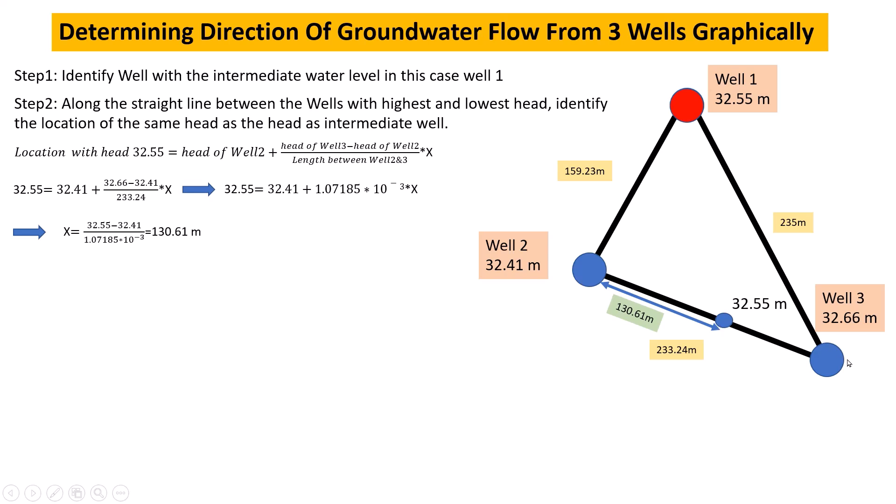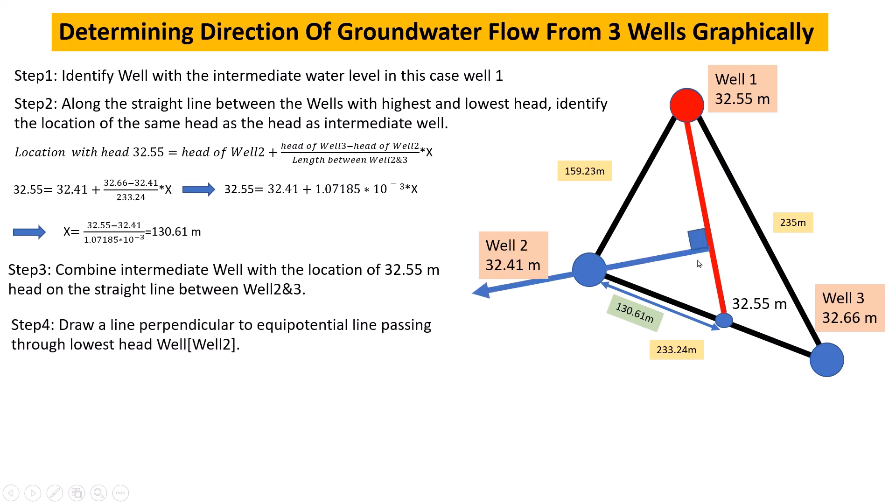On the line between Well 2 and Well 3, we mark the location at 130.61 meters with a 32.55-meter water table. We connect Well 1 with this point, creating an equipotential line where the water table is 32.55 meters.